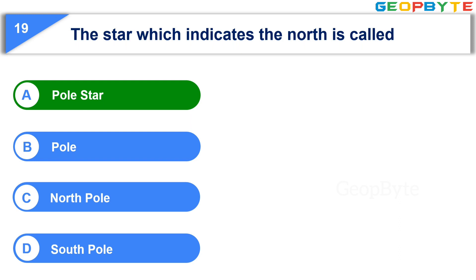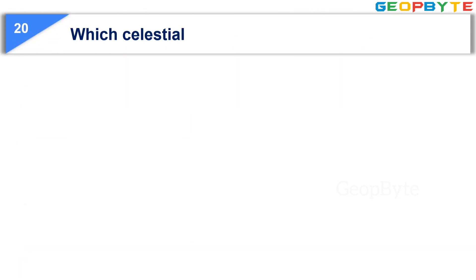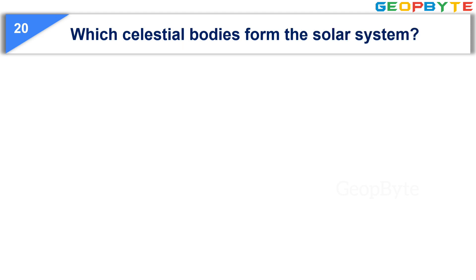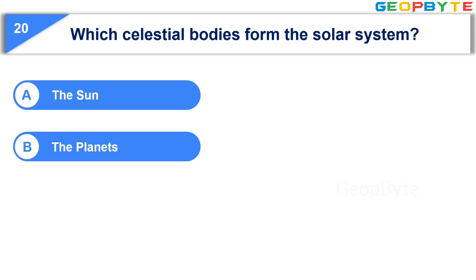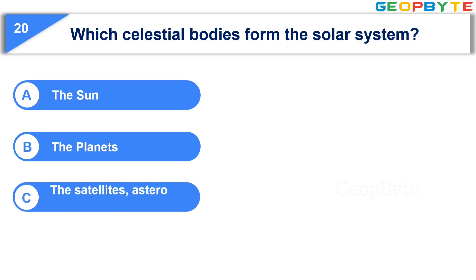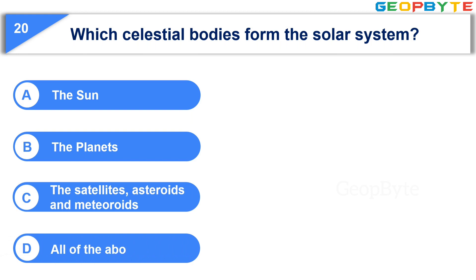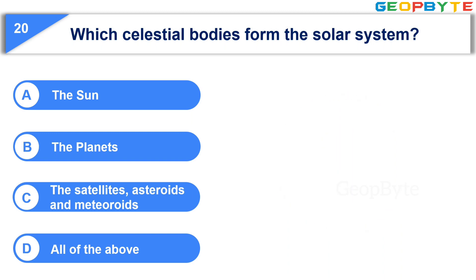The last question is: Which celestial bodies form the solar system? Option A: The sun. Option B: The planets. Option C: The satellites, asteroids, and meteoroids. Option D: All of the above. Your time starts now. Your time is up and the correct answer is Option D: All of the above — that is, the sun, the planets, and the satellites, asteroids, and meteoroids.